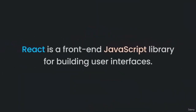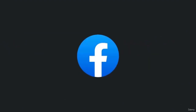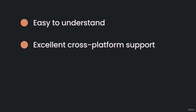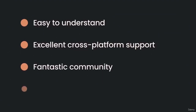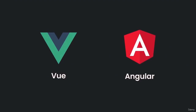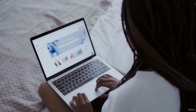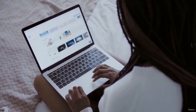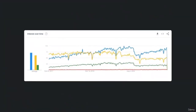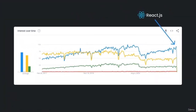React is a front-end JavaScript library for building user interfaces. It was developed by Facebook and is maintained by Facebook and the open-source community. ReactJS is phenomenal — easy to understand, with excellent cross-platform support, a fantastic community, and one of the most loved libraries out there. There are also two great ReactJS competitors: Vue.js and Angular. These libraries and frameworks are mainly used to create fast and efficient single-page applications, but taking a quick look at Google Trends, we can clearly see that ReactJS is still in the lead by far.